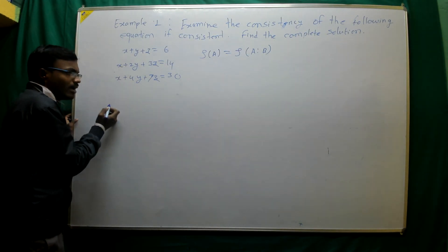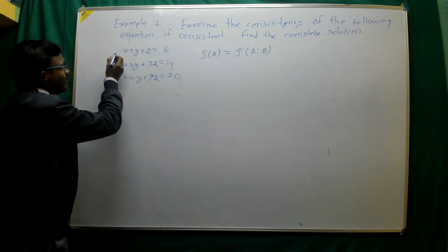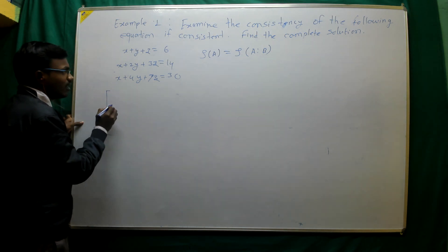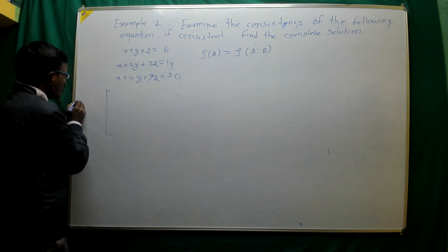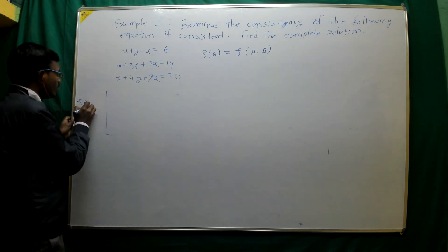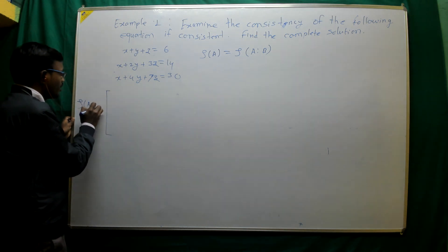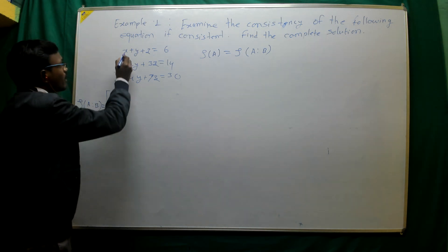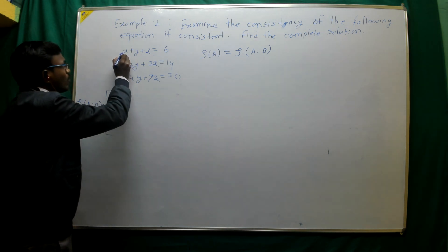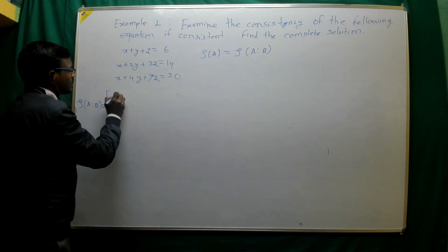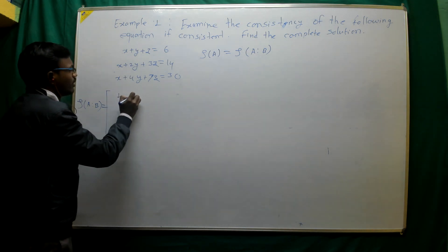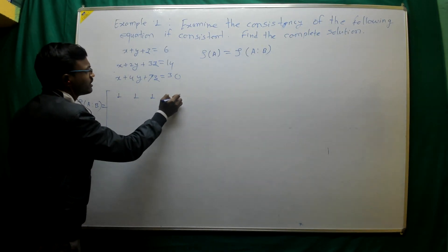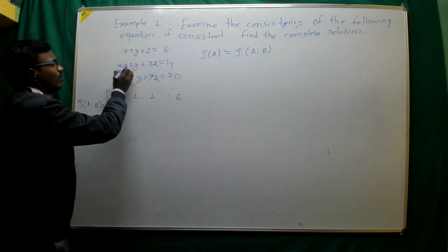So here I will write the augmented matrix. The rank of the augmented matrix [A|b] is written row by row. First row: 1, 1, 1, 6. Second row: 1, 2, 3, 14.